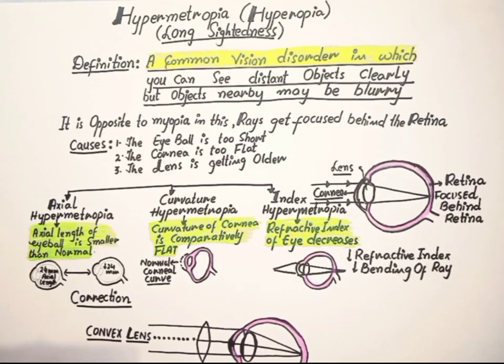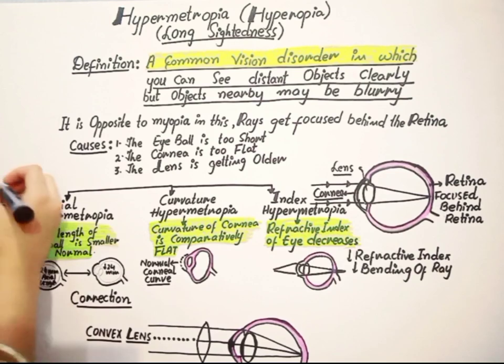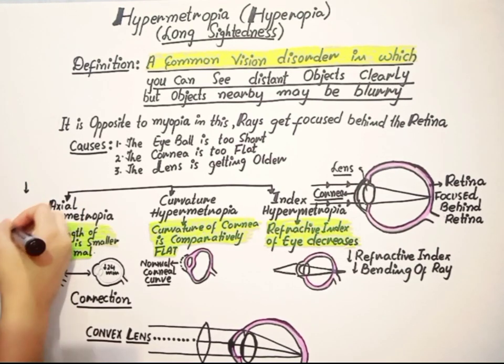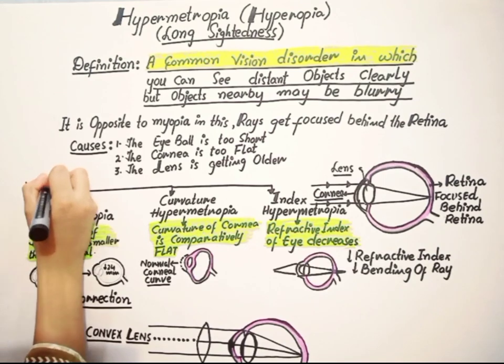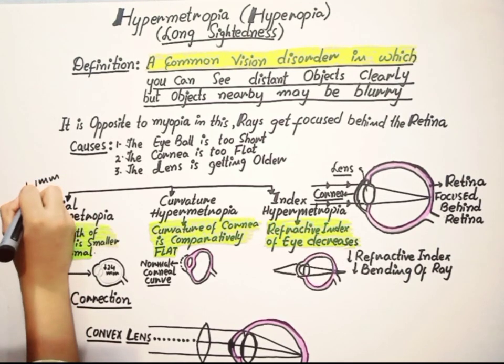About 1 millimeter decrease in axial length causes 3 diopters of hypermetropia. Means whenever the axial length of eye decreased by 1 millimeter, then 3 diopters of hypermetropia.